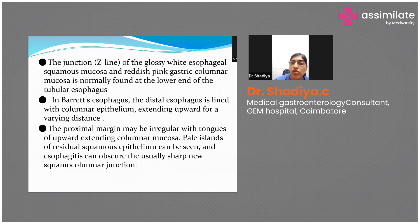The junction of the glossy white esophageal squamous mucosa and the reddish pink gastric columnar mucosa is normally found at the lower end of the tubular esophagus. In Barrett's esophagus, the distal esophagus is lined with columnar epithelium extending upward for a varying distance. The proximal margin may be irregular with tongues of upward-extending columnar mucosa.